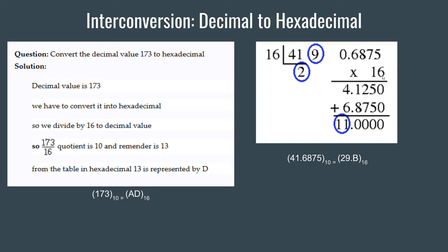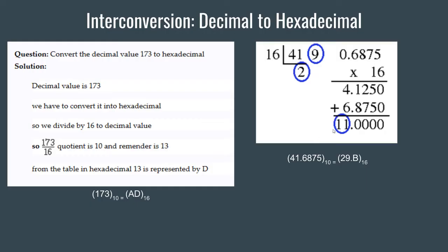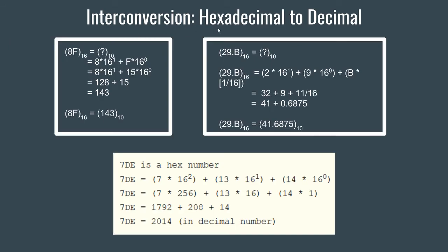For the fractional part, we multiply by 16. Upon multiplication we get 11, and the remaining decimal part is zero, so we stop immediately. From the table, the hexadecimal equivalent of decimal 11 is B. Therefore we write 11 as B, and hence 41.6875 base 10 is equivalent to 29.B base 16.